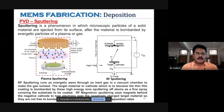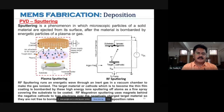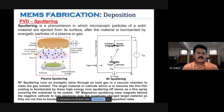Inside the sputtering chamber, the substrate and its holder are kept as the positive anode. At the top is the cathode, which is the target material — the material to be deposited on the substrate. An inert gas such as argon is introduced and ionized by RF agitation (radio frequency) or a high electric spark. The argon positive ions move fast toward the target material and knock out material from it. The knocked-out material is attracted to the substrate and forms a coating.